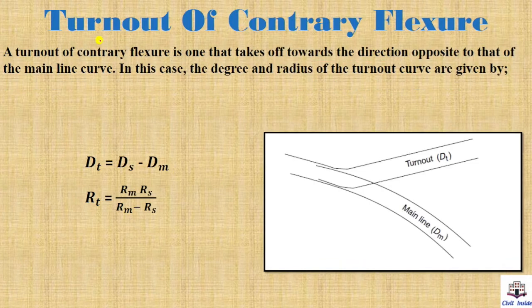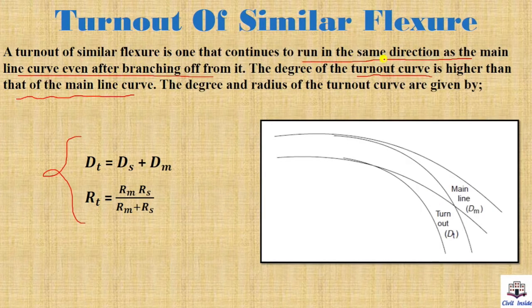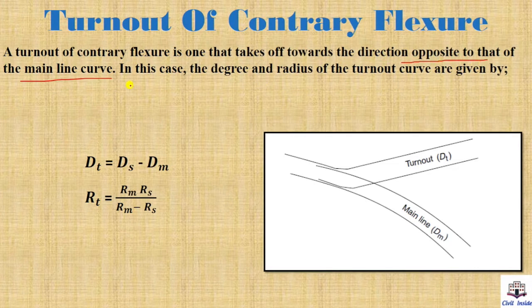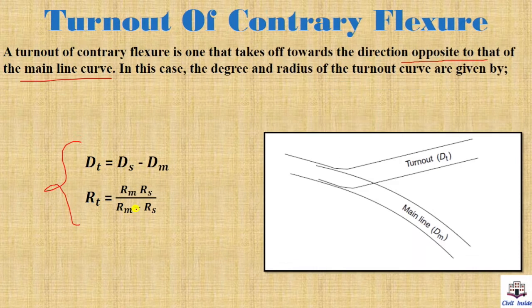Next is the turn out of contrary flexor — it is the opposite. A turn out of contrary flexor is one that takes off towards the direction opposite to that of the main line curve. In this case, the degree and radius of the turn out curve are given by two formulas, but here the value is negative rather than positive. That is the key difference.